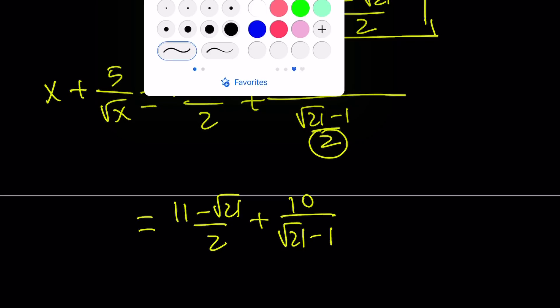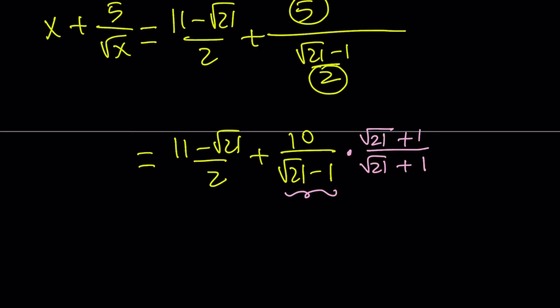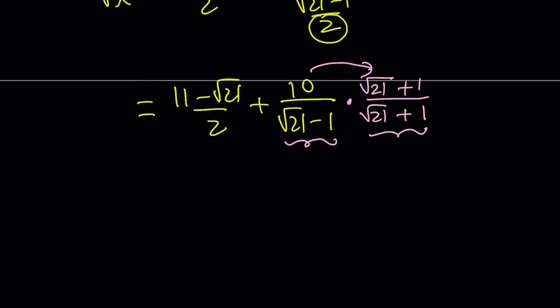At this point, I want to rationalize the denominator, right? Multiply by the conjugate of this expression here, which is root 21 plus 1. Multiply and divide. This is just going to stay as is. But when you multiply these two together, you're going to get 10 times the square root of 21 plus 1 divided by 21 minus 1, which is going to be 20.